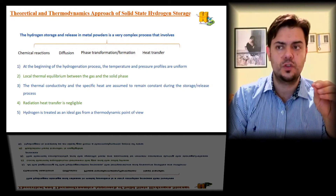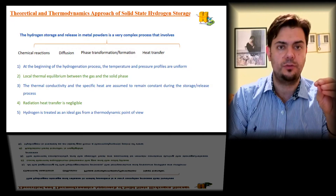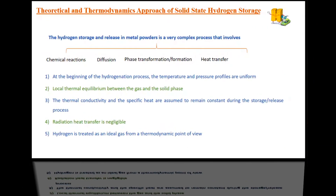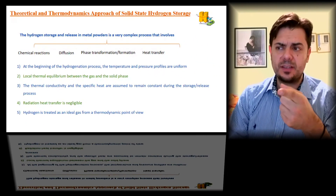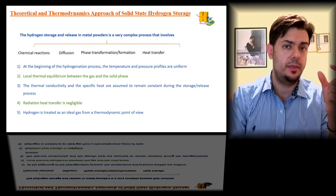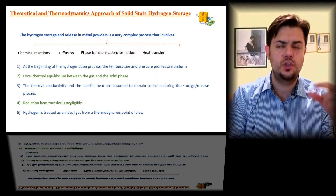Some of the most common assumptions are: first, at the beginning of the hydrogenation process, the temperature and pressure profiles are quite uniform. Second, there is local thermal equilibrium between the gas and the solid phase. Third, the thermal conductivity and the specific heat capacities Cp and Cv do not change during the whole reaction, although we know they depend on temperature.